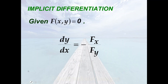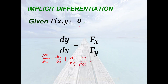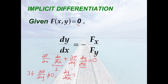For the left-hand side, we get the partial of f with respect to x times the derivative of x with respect to x, plus the partial of f with respect to y times dy/dx. The right-hand side gives the derivative of 0, which is 0. Since dx/dx = 1, if the partial of f with respect to y is not equal to 0, we can solve for dy/dx, giving us dy/dx = negative of the partial of f with respect to x over the partial of f with respect to y.